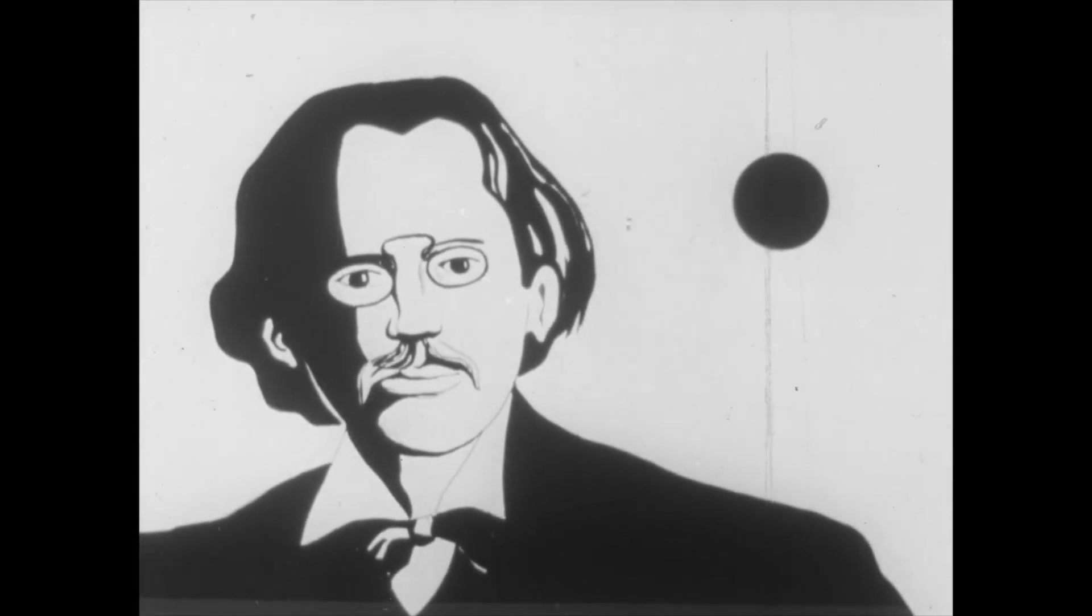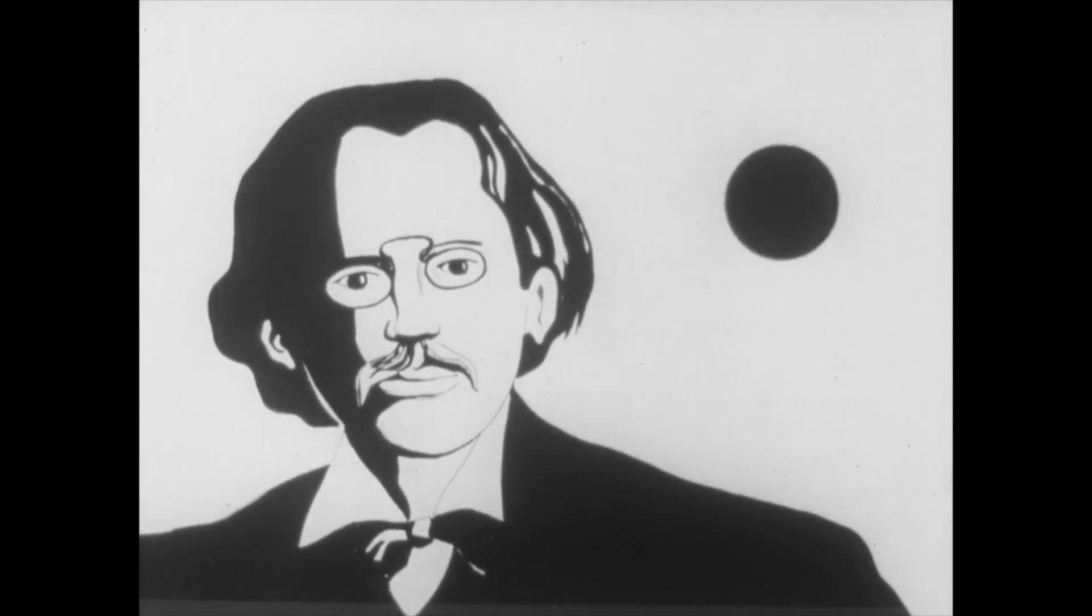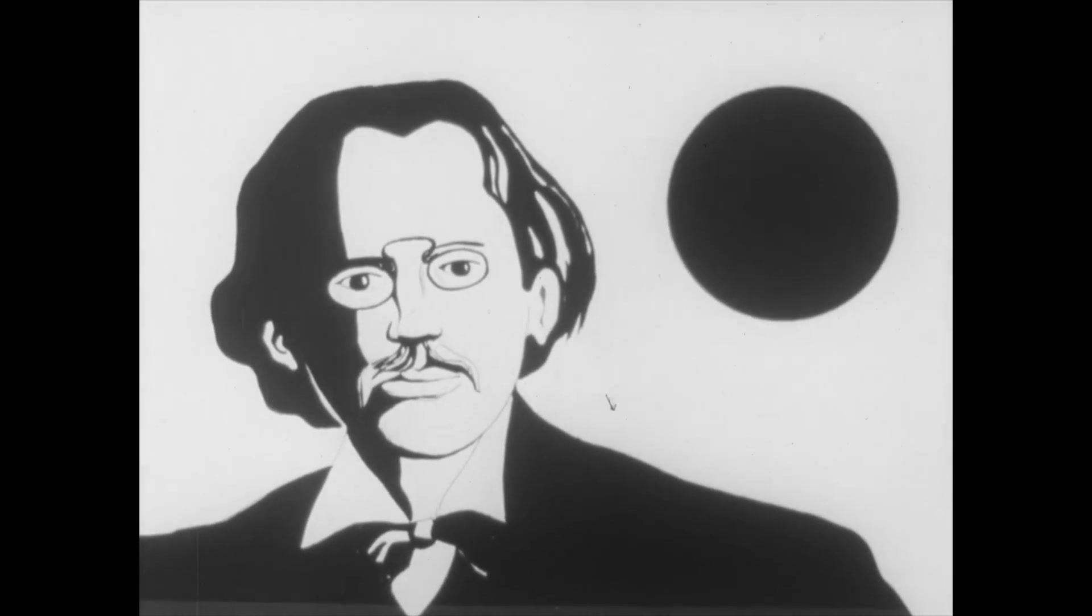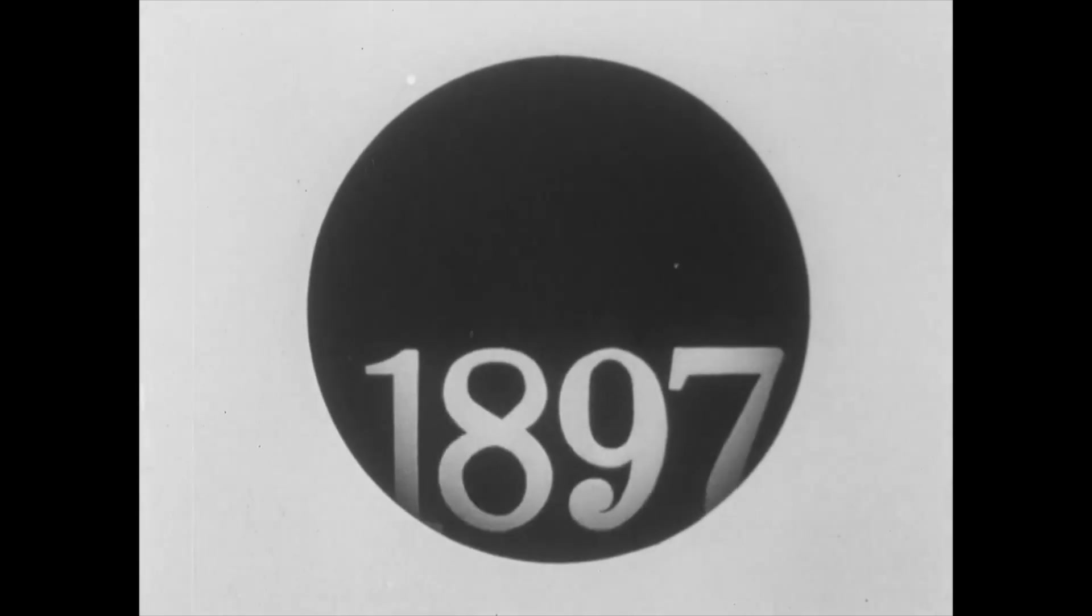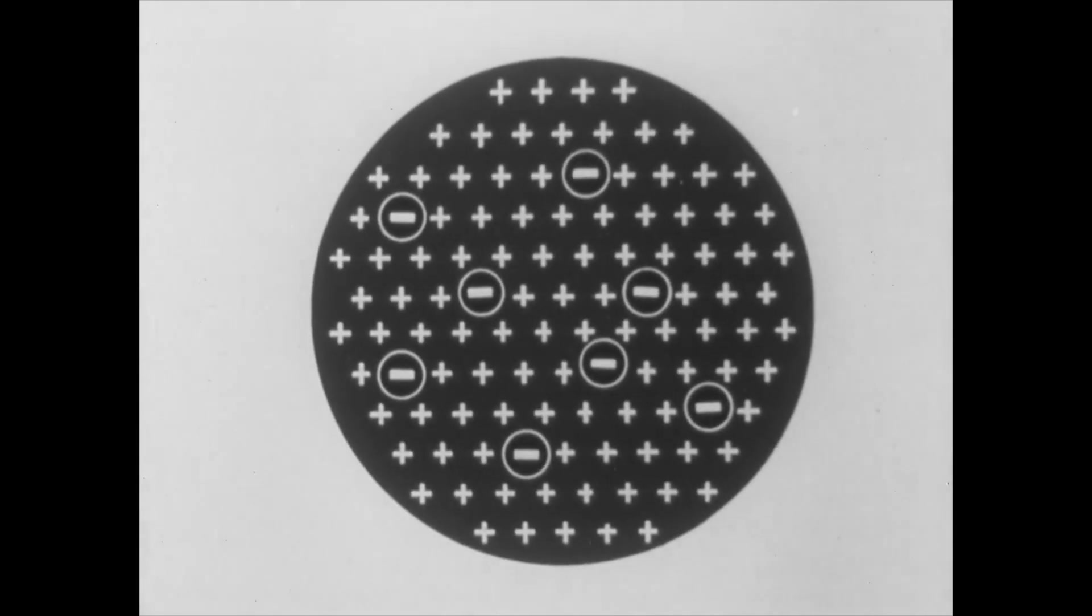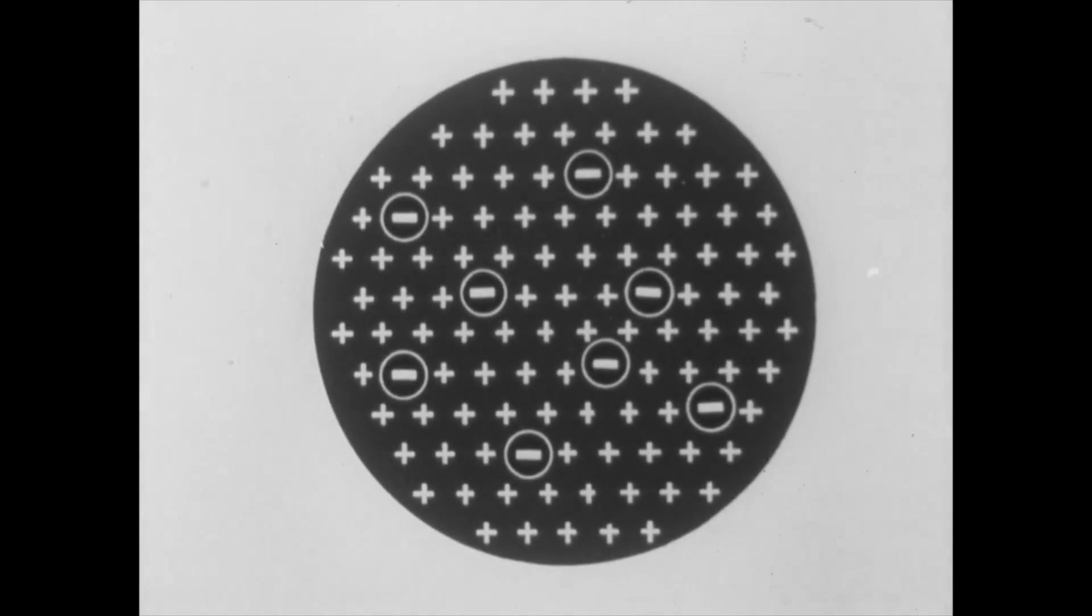Ideas about the structure of the atom began to form by the end of the 19th century. In 1897, the famous English physicist Joseph John Thompson proposed a model of the atom in which the positive charge is uniformly distributed throughout the volume.